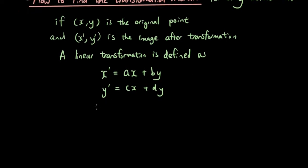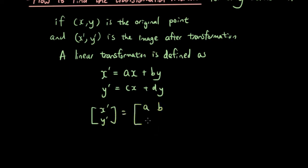You can also write this in matrix form, which is: the column vector x', y' equals the transformation matrix [a, b; c, d] multiplied by the column vector containing the original point x, y.